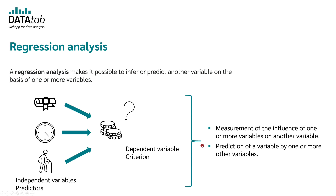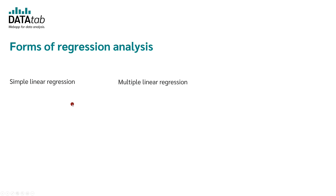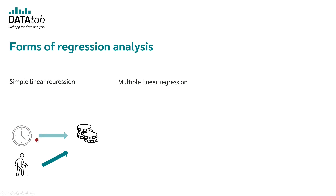Regression analysis is used for two purposes. One purpose is to measure the influence of one or more variables on another variable, and the second purpose is to predict a variable by one or more other variables. The simple linear regression uses only one independent variable to predict the dependent variable. In the example where we want to predict the salary of a person, we use only one variable — either educational level, the weekly working hours, or the age of a person.